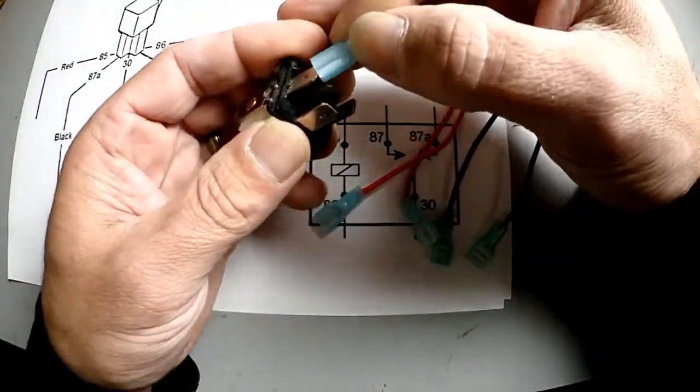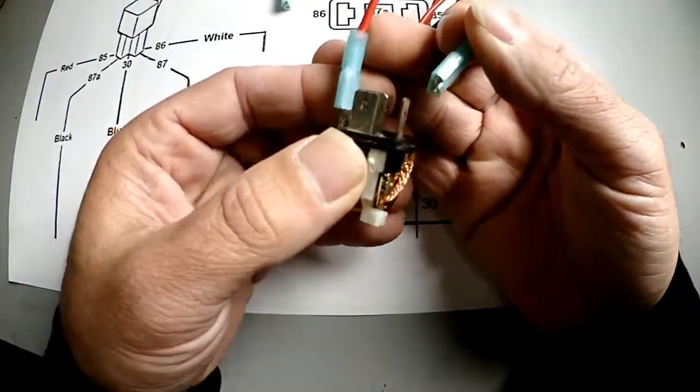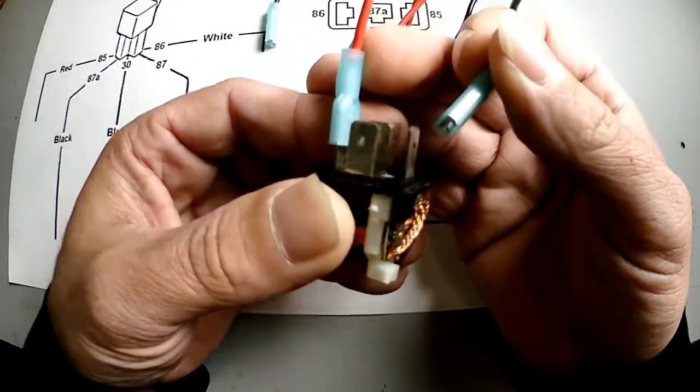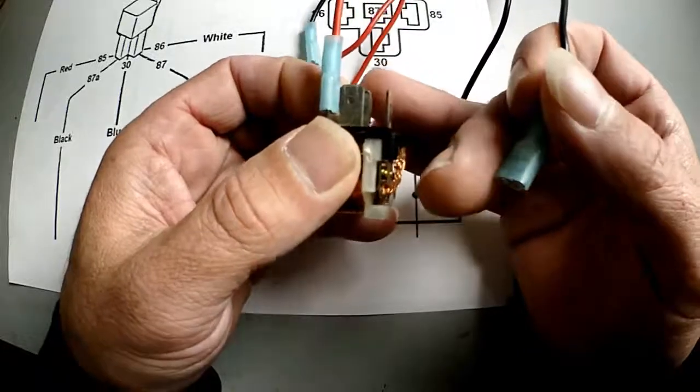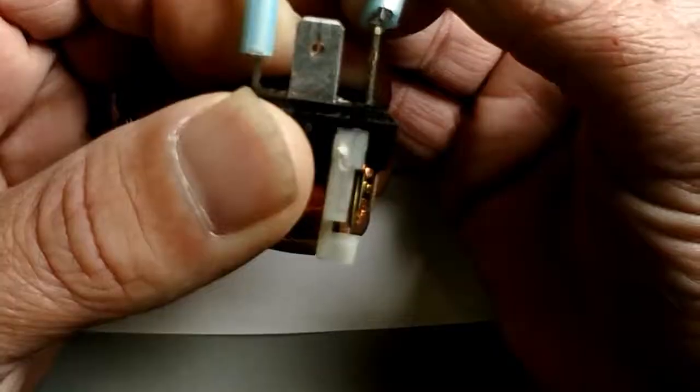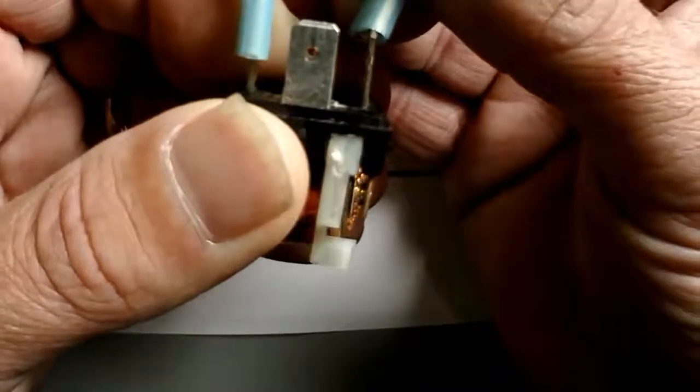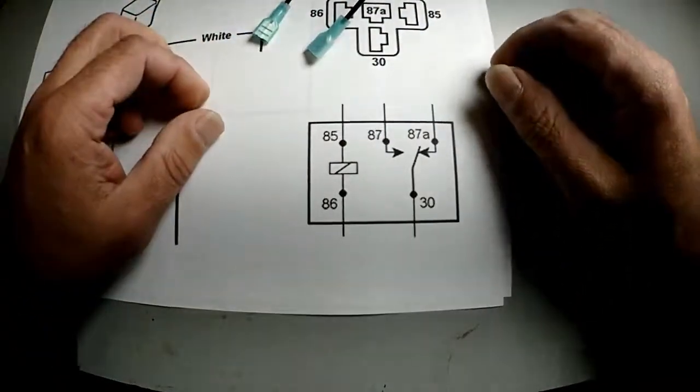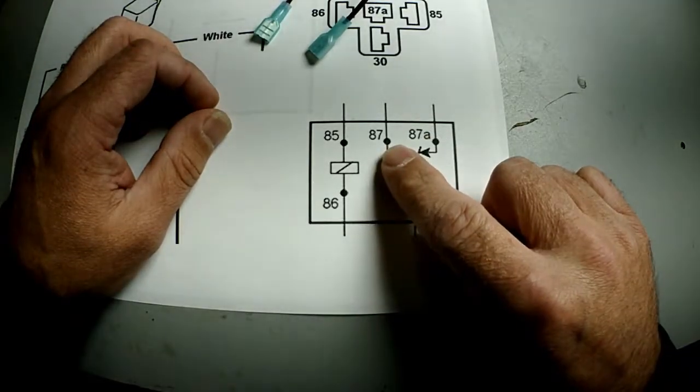Now I'm going to put power on one side, ground on the other. It doesn't matter which side you use for which, it makes no difference whatsoever. If you watch this spot right here, you're going to see this little reed switch. What that is doing is making it switch from 87A to 87.